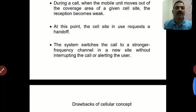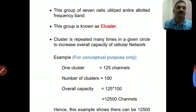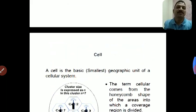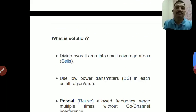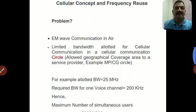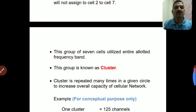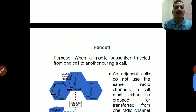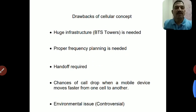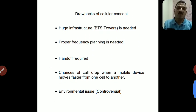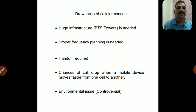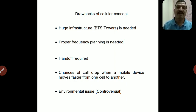So in this way we can understand four basic points of cellular communication: one is FDD, one is the cellular concept, third is frequency reuse, and the fourth point is handoff. In cellular communication we also have some drawbacks. The most important drawback is that since we are divided into small parts, we need a lot of infrastructure — there are many BTS towers required.